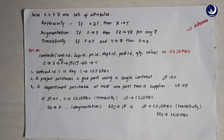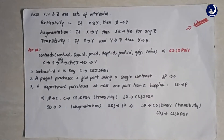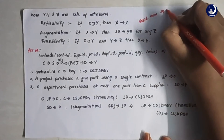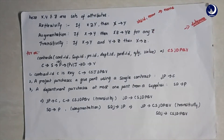The first Armstrong axiom is reflexivity: if X is a superset of Y — meaning Y is a subset of X — then X determines Y. For example, if X contains student ID and name, and Y contains just name, then Y is a subset of X, so X determines Y. The arrow symbol means 'determines' — X is the determinant and Y is the dependent.